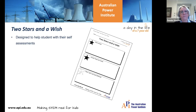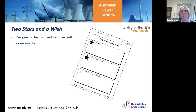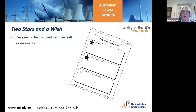The next one is a 'two stars and a wish' sheet, which is particularly good for when students are doing and designing their own investigations. They write down two things that worked and then a third thing — a wish — something they wish they'd done better. It supports self-assessment and peer assessment, and can also be used for the teacher to give feedback to students.